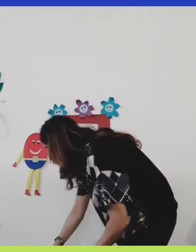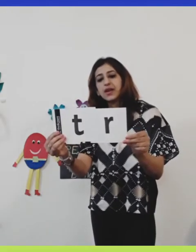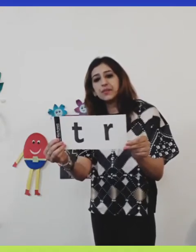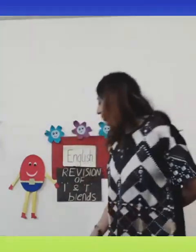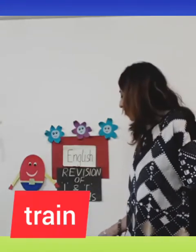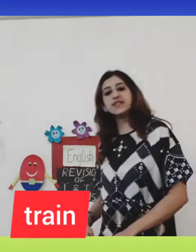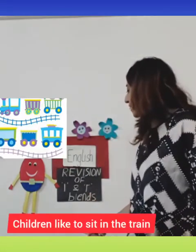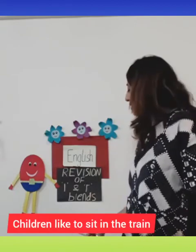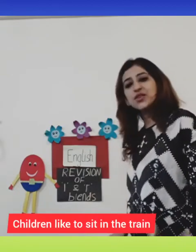Now we have the last letter. What sound does this letter make? T. And what sound does this letter make? R. Together we hear the sound 'truh'. And what word can we form with this sound? The word is 'train'. And what sentence can we make with the word train? Children like to sit in the train.